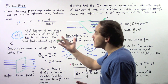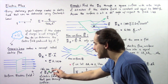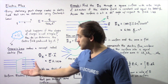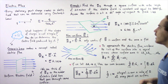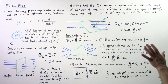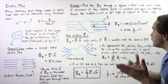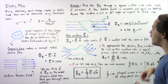We define electric flux as simply the number of electric field lines that pass through some given surface. Let's look at the following example: find the electric flux through a square surface with a side length of two meters if the electric field is constant and equal to 3000 newtons per coulomb. Assume that the surface is flat and is at an angle of 60 degrees with respect to the field lines, as shown in the following diagram.